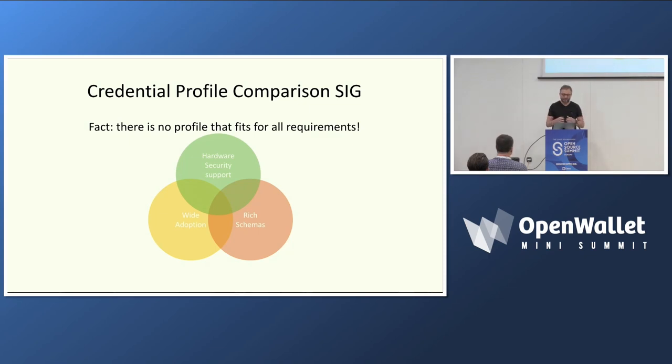It was really amazing. And that turned into a huge Google Sheet with the different formats and all that. Then we brought that activity to OWF because we believe OWF is the best home for it, as it is technology agnostic. Anyone can bring any project implementing any kind of technology to OWF, and we believe the Credential Profile Comparison Special Interest Group will help implementers figure out what's the best fit for their problem.